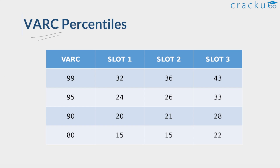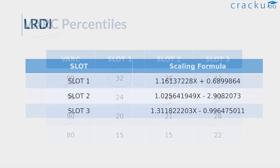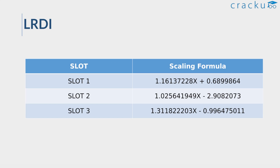These are the percentiles of the VARC section for all three slots with corresponding raw scores. In Slot 1 VARC, a score of around 32 or higher would give you 99+ percentile. In Slot 3, you need at least 43 marks for 99 percentile. In Slot 2, it's somewhere between — around 36. For 95 percentile, the raw score was 24 in Slot 1, around 26 in Slot 2, and around 33 in Slot 3. These are the raw scores for 80th and 90th percentiles.